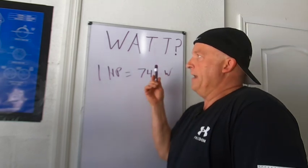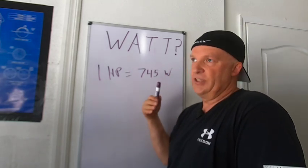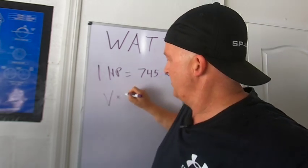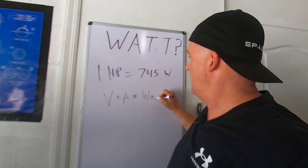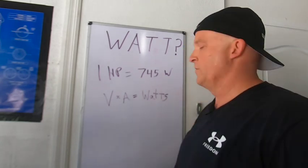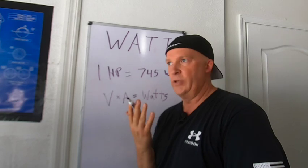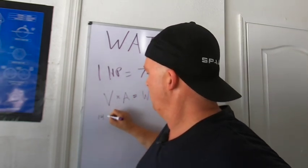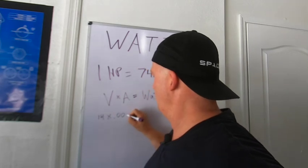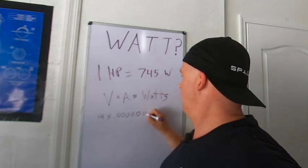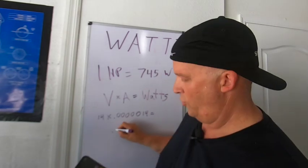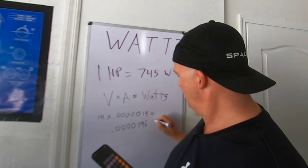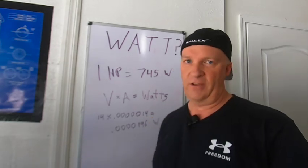Now, how do you find a watt from, say, voltage and current? Well, volts times amps equals watts. So let's take our fan, for example. We were running at 0.014 milliamps. So that's 14 volts times 0.000014 equals 0.0000196 watts. That fan doesn't take much power, does it?